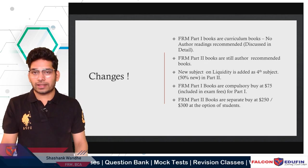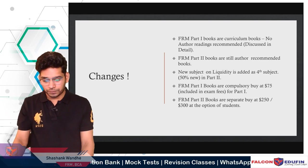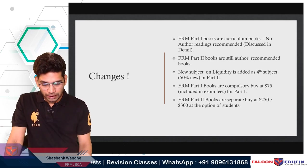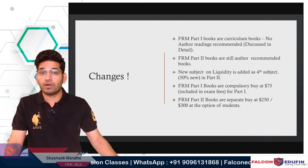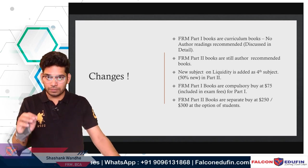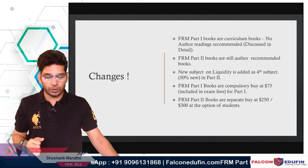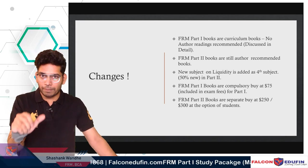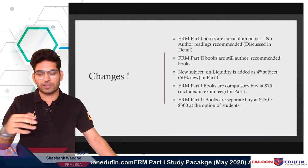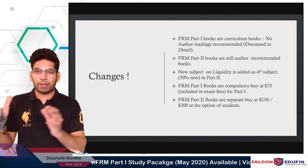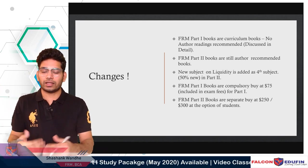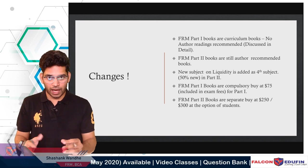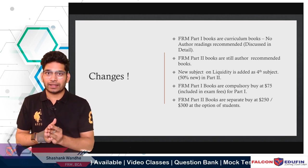First, we'll look at the changes in the existing curriculum compared to 2019. In the new 2020 session, FRM Part 1 books are now curriculum books — GARP is providing a single book, its own curriculum book, instead of the previous style where GARP recommended authors and you were supposed to read chapters from different authors, which GARP would compile into their books.